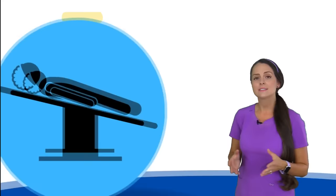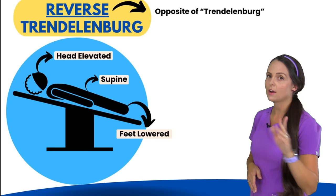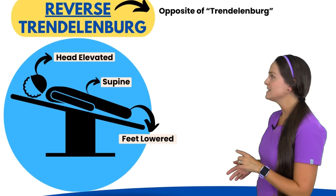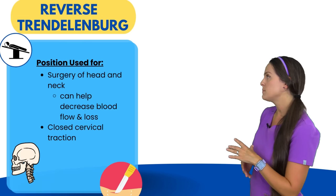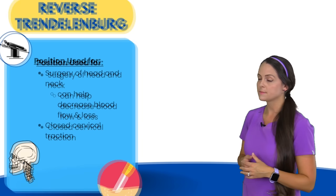Next is reverse Trendelenburg, which is the opposite of Trendelenburg. The patient is again supine, but the head is elevated and the feet are lowered. This position is useful when patients are having surgery of the head and neck, because it decreases blood flow and hopefully decreases blood loss. It's also helpful for closed cervical traction.